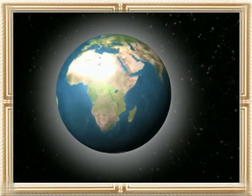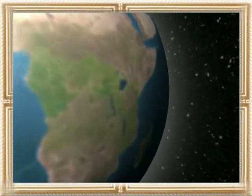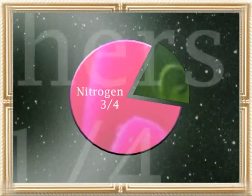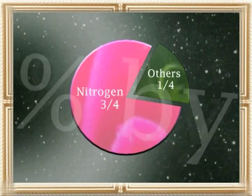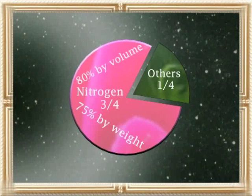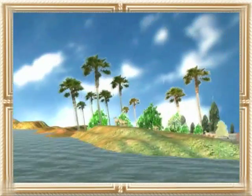Today we will discover them together. Are you ready? Air consists of three-fourths of Nitrogen by weight and four-fifths by volume, so that means 75% by weight and 80% by volume. Even all animals and plant tissue constitutes Nitrogen.